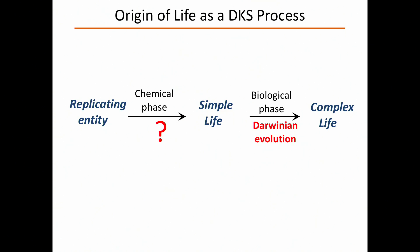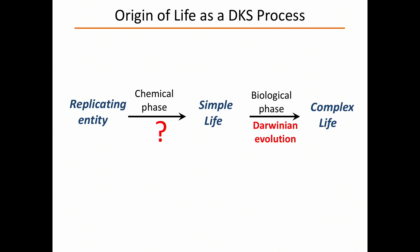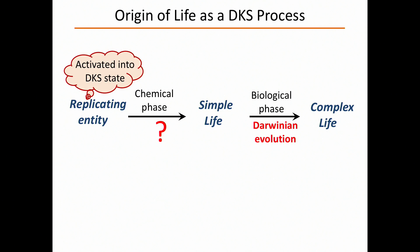We see evolution taking place at the chemical level. Going back to my earlier scheme: if we start off with a replicating entity, having a replicating entity is not enough — it's got to be in that DKS state for that evolutionary process to kick in. And now we can specify what the driving force is: the drive towards greater stability — this dynamic kinetic stability, not static kinetic stability and not thermodynamic stability. Stability as persistence. Thank you.